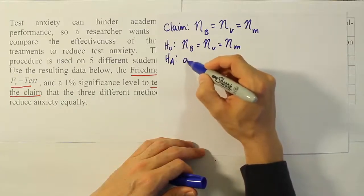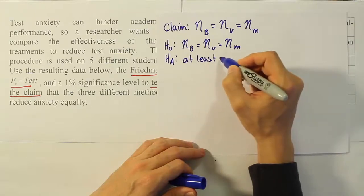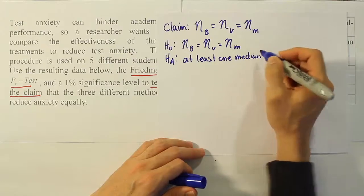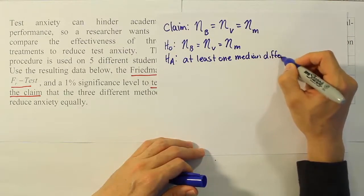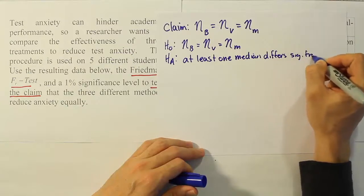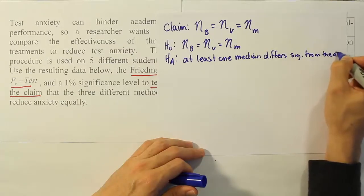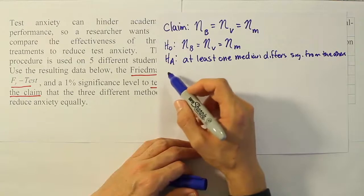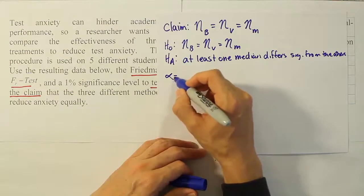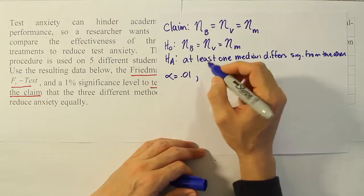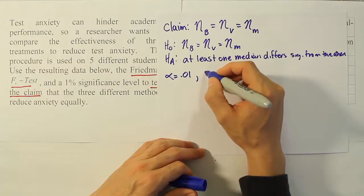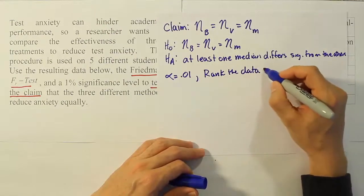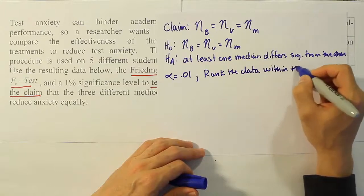And then for HA, it's going to be at least one median differs significantly from the rest. We want to express our significance level, which is 0.01. And then we're going to start manipulating the data. So we're going to rank the data within the blocks.